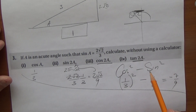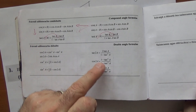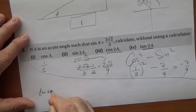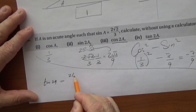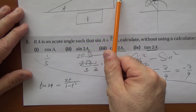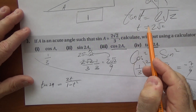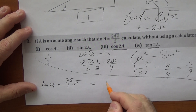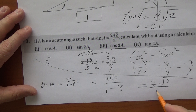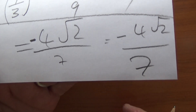For tan(2a), there's only one formula: 2t/(1 - t²). Here tan(a) = 2√2, so t = 2√2. Thus tan(2a) = 2×(2√2)/(1 - (2√2)²) = 4√2/(1 - 8) = 4√2/(-7) = -4√2/7.